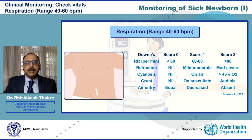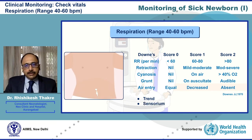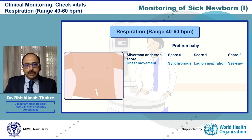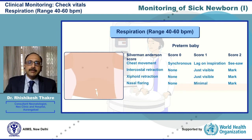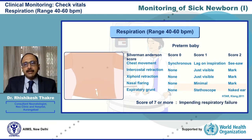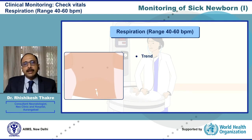Based on each of these parameters, a score of 0, 1 or 2 is given. One would look at the trend of the scores and interpret them taking into consideration the sensorium and oxygen saturation of the sick newborn. In preterm babies, we would use the Silverman Anderson score, which takes into consideration five bedside clinical parameters: chest movements, intercostal retraction, xiphoid retraction, nasal flaring and expiratory grunt. A score of 0, 1 and 2 is given to each parameter, and a score of seven or more indicates impending respiratory failure. One would look at the trend of the score and interpret it with sensorium and oxygen saturation in mind.